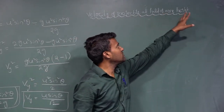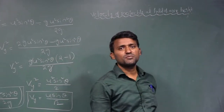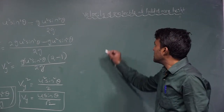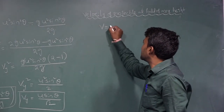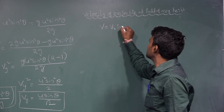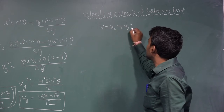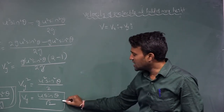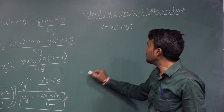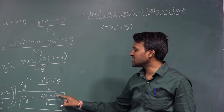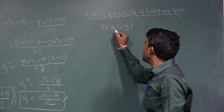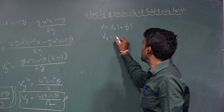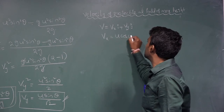Velocity of projectile at half of maximum height. At half of maximum height, V is equal to Vx·î plus Vy·ĵ. The vertical velocity we already calculated: Vy is equal to U sinθ divided by √2. And Vx is equal to U cosθ.